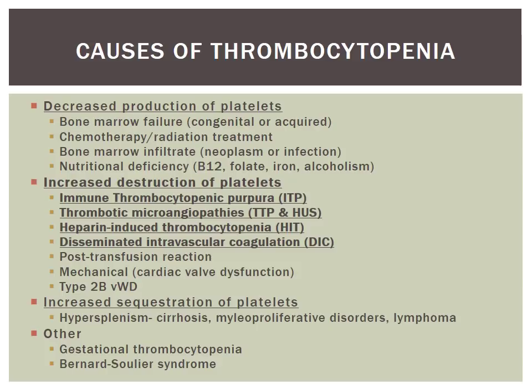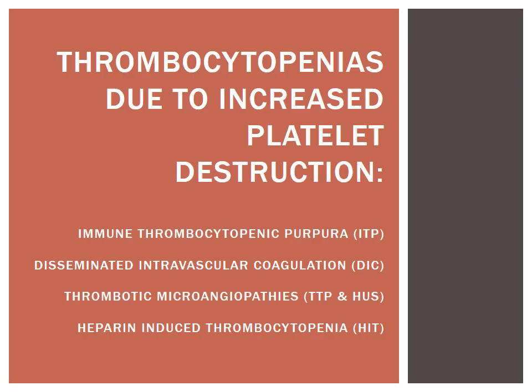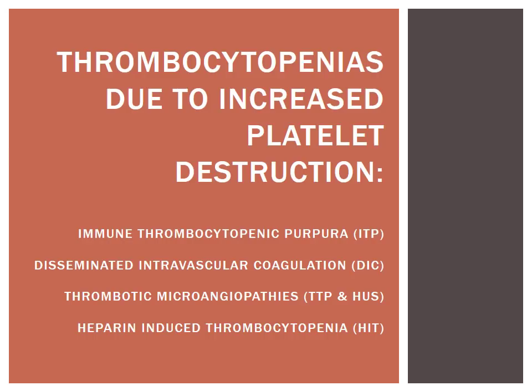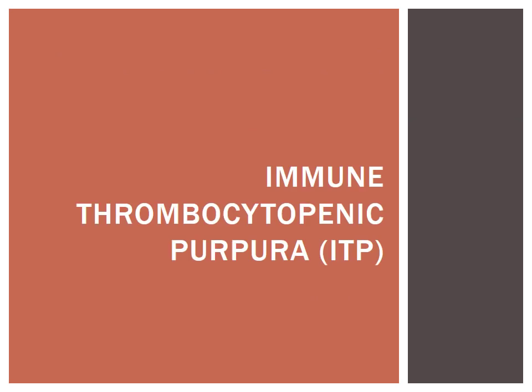Decreased production of platelets is often due to bone marrow issues or nutritional deficiencies. Increased destruction includes ITP, DIC, TTP, HUS, and HIT, as well as transfusion reactions and cardiac valves. Sequestration is often due to hypersplenism — the spleen overacting. There are also gestational thrombocytopenia during pregnancy and some syndromes involving low platelets.